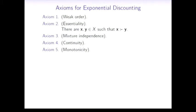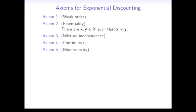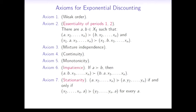Now when we have this result, it's possible to add some axioms and build on it to obtain exponential discounting. We start with the same five axioms here, and we need to change essentiality to essentiality of periods 1 and 2. Then it's necessary to add an axiom of impatience. Intuitively it's quite clear what it means: if you prefer a to b, then you will also prefer such a consumption stream where a goes first before b rather than the other way around.